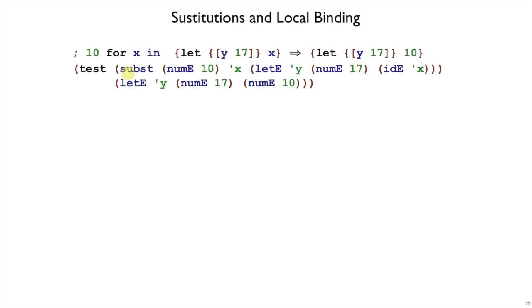And if we write that out as a test case it looks like this: we're calling subst on the expression 10 for x and this let e representing a let expression. The ide x is going to change to the num e 10.